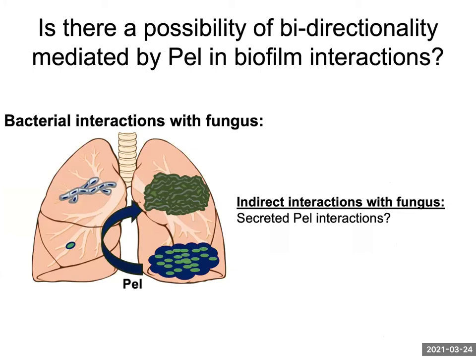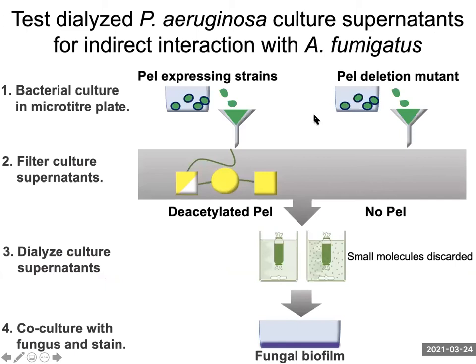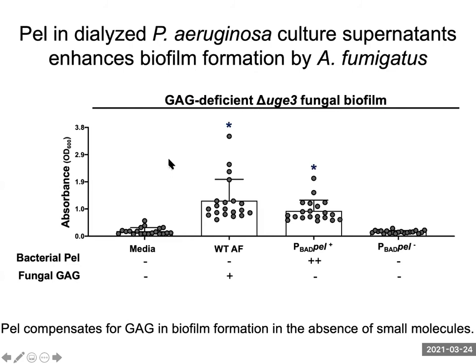I've told you about the direct and indirect interactions on the fungal side of this story. On the bacterial side, we investigated whether there's a possibility for bi-directionality mediated by PEL in fungal biofilms. Similar to our fungal story, we collected culture supernatants from the bacteria, and this time we dialyzed them to remove the small inhibitory molecules I mentioned earlier, then assayed for biofilm formation with the fungus. We observed that on a GAG-deficient fungal strain that can't form biofilms, the wild-type fungal culture supernatants rescued biofilm formation as expected. But the bacterial culture supernatants containing PEL also rescued biofilm formation, albeit to a lower level, suggesting that PEL compensates for GAG in biofilm formation in the absence of small molecules.